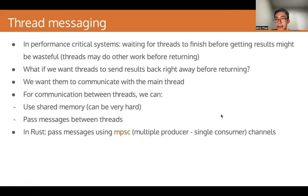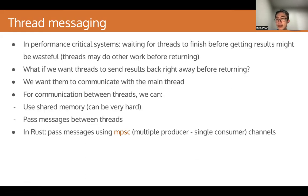Now, in the last lecture, how we handled the reduce stage was to wait for each thread to finish and then draw the result. But in performance-critical systems, waiting for threads to finish before getting the result might be wasteful, because our threads may do some other work before they actually return — and so we have to wait for that other work too. What if we want threads to send results back right away before they return? We want them to be able to communicate with the main thread somehow. For communication between threads, we can either use shared memory, which can be very hard to get right, or we can pass messages between threads.